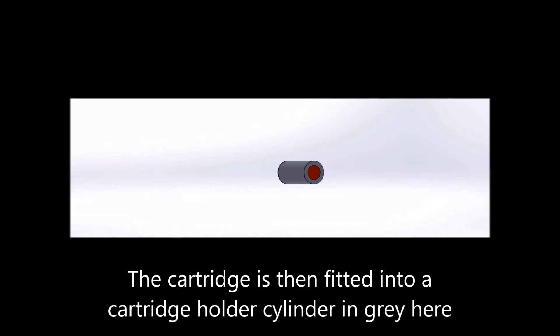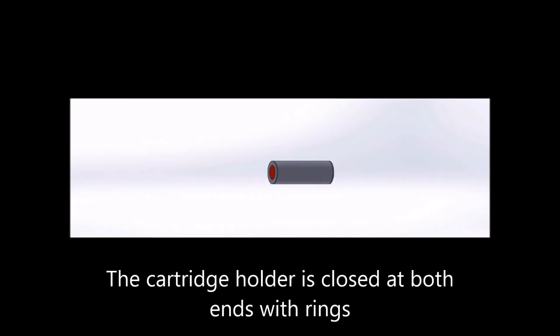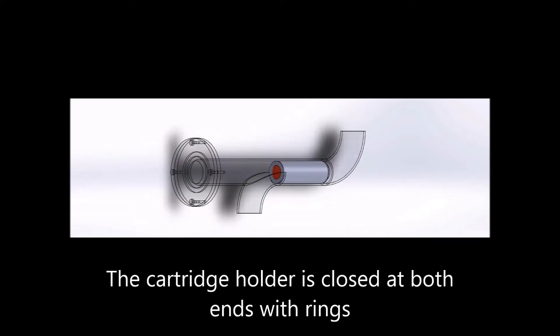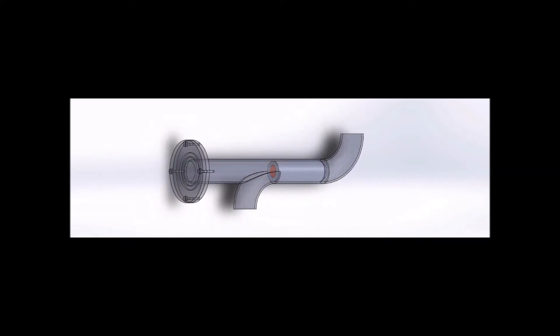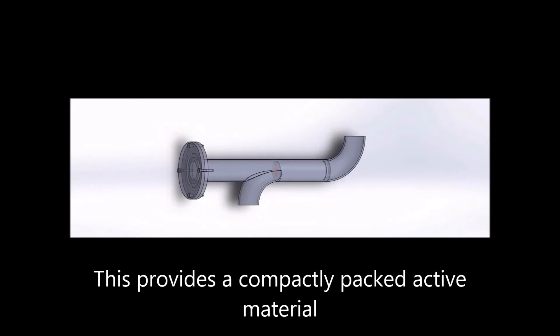The cartridge is then inserted into a cartridge holder closed at both ends with rings. The rings secure the cartridge and at the same time allow water to flow freely through the active material.